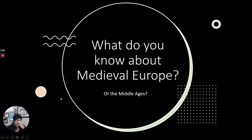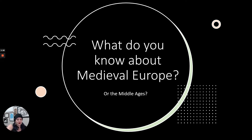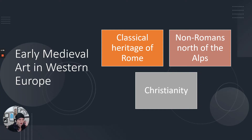So what do you know about medieval Europe or the Middle Ages? Usually when I ask this in my seated class people say things like castles and knights and jousting, and you are not wrong. There's also other things going on but let's just get right into it. Early medieval art in Western Europe has three really big influences, and a lot of the influence comes from these three things.